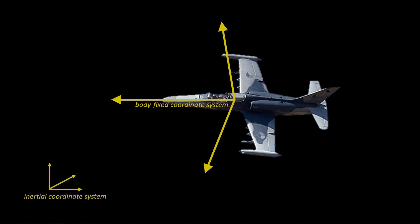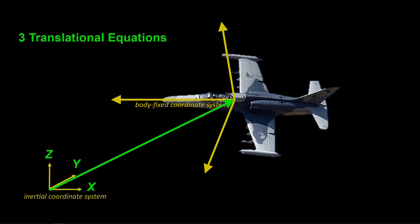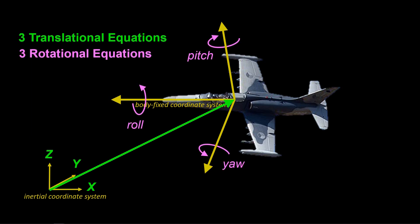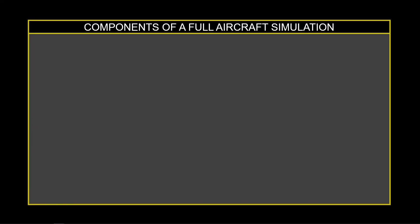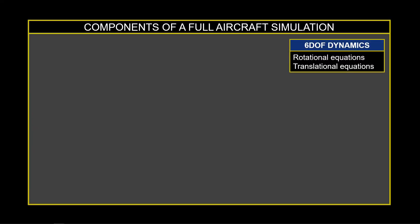The aircraft can translate in three directions. It can also rotate with respect to the earth in roll, pitch, and yaw. Together, these are six degrees of freedom that correspond to the so-called 6DOF model. We will incorporate the 6DOF dynamics into our aircraft simulation. Note, often the term aircraft simulation is used synonymously with 6DOF.